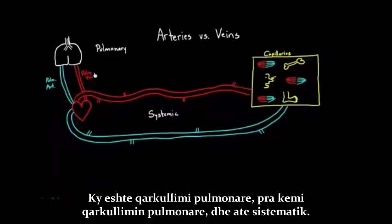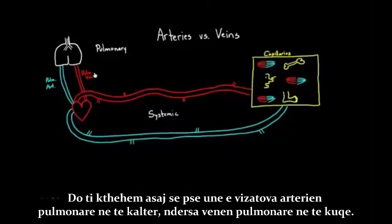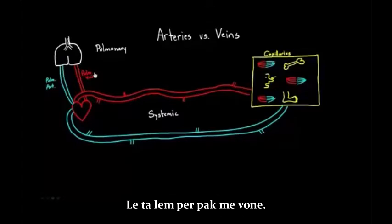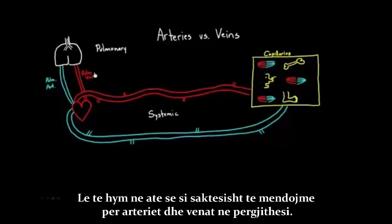So that's your pulmonary circulation. You have pulmonary circulation and you have the systemic circulation. I'll get back to why I drew the pulmonary artery in blue and the pulmonary vein in red in just a moment. But first, let's get into exactly how to think about arteries and veins in general.